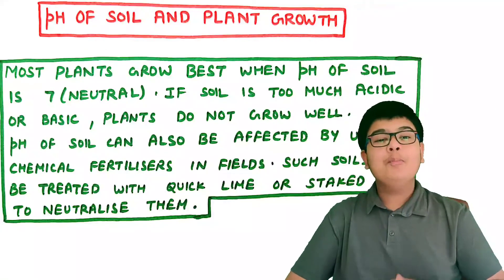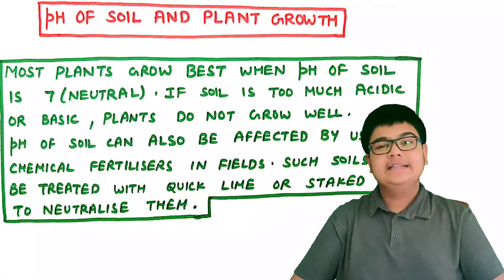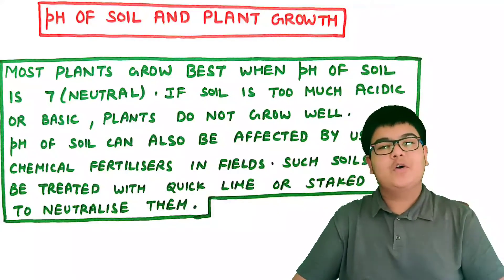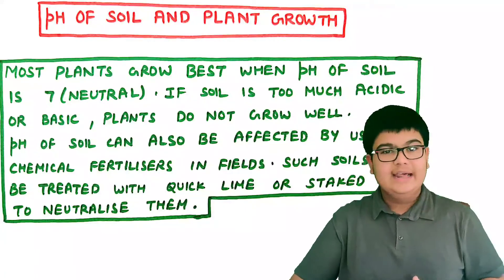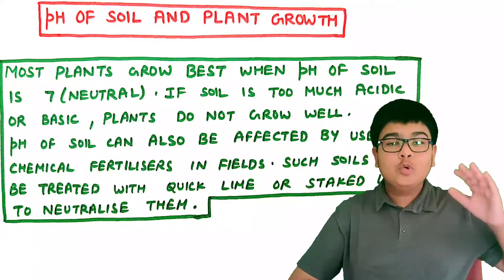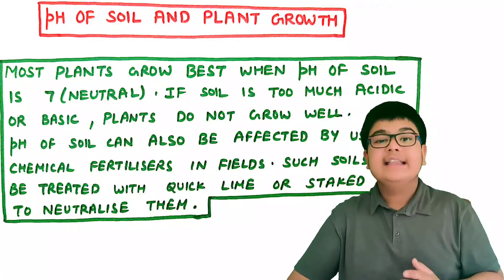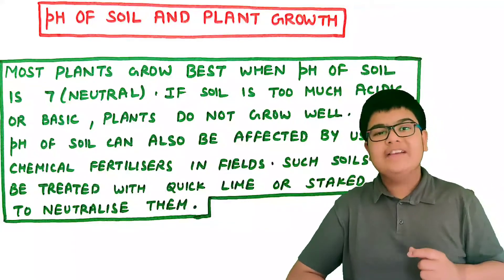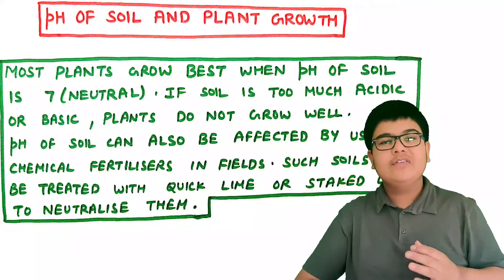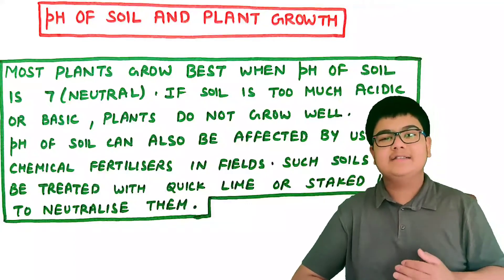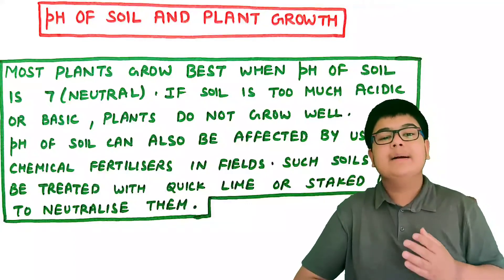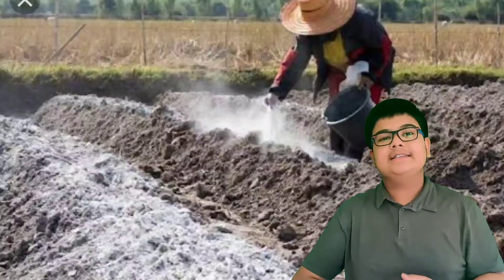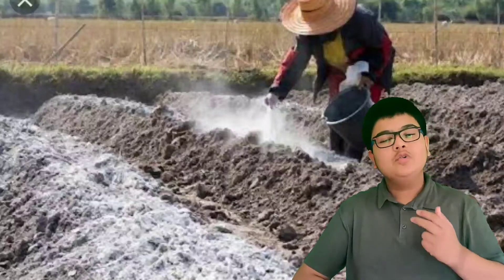Now let's see how pH affects soil and plant growth. Most plants grow best when the pH of soil is neutral, that is 7. But if the soil becomes too acidic or too basic, the plants do not grow well. The pH of soil can also be affected by the use of fertilizers — if farmers keep using excessive fertilizers, the pH of soil can become too acidic or too basic. Such soils need to be treated with chemicals such as quicklime or slaked lime to neutralize them.